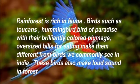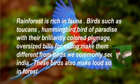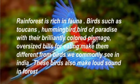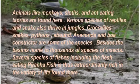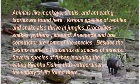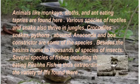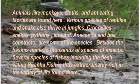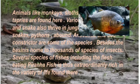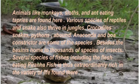The Rain Forest is rich in fauna. Birds such as toucans, hummingbirds, and birds of paradise, with their brightly coloured plumage, make them different from other birds we commonly see in India. These birds also make loud sounds in the forest. Animals like monkeys, sloths, and ant-eating tapirs are found here. Various species of reptiles and snakes also thrive in the jungle. Crocodiles, snakes, pythons, anacondas, and boa constrictors are some of the species. The basin is home to thousands of species of insects. Several species of fish, including the flesh-eating piranha, make it extraordinarily rich in variety of life.